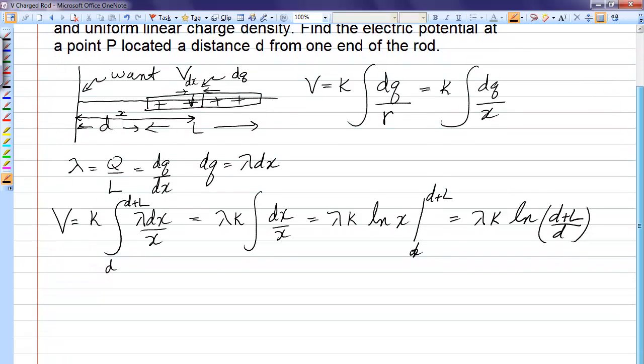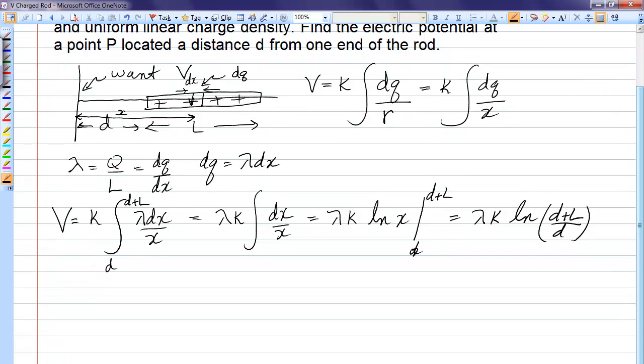Now, let's just do one more variation here. What if that rod were curved? So if we had a curved rod, let's say the curve is like this, and the radius of that curve is r.